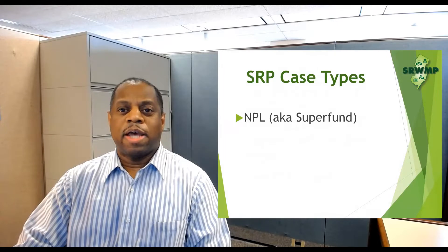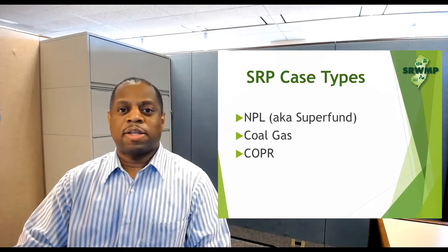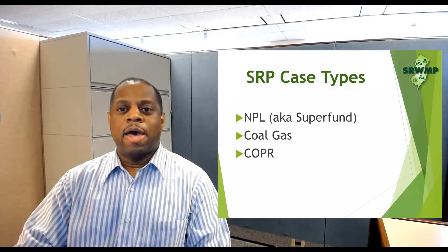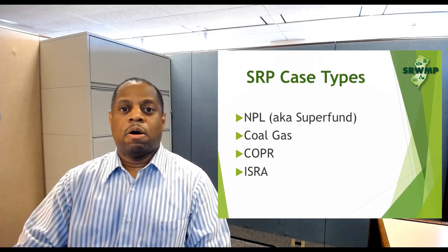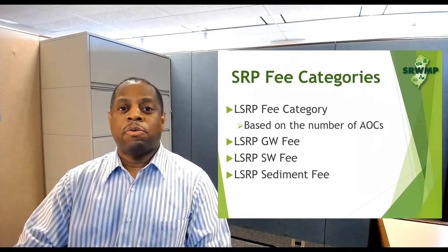Various case types associated with the SRP case, such as National Priority Listing, coal gas, chromite ore processing residue — more commonly referred to as COPR — and cases triggered via the Industrial Site Recovery Act are also incorporated.